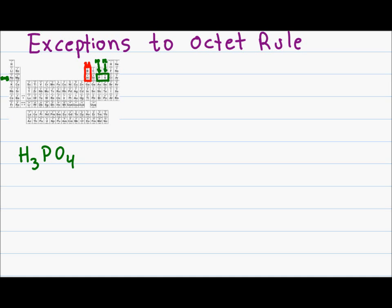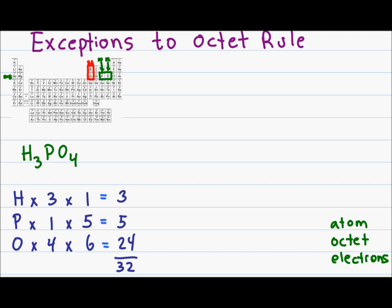Before we start, let's take a quick tally of electrons. We have hydrogen times three and one electron each. We have phosphorus times one and five electrons. Then we have oxygen times four and six electrons. Adding them up, I get a total of 32 electrons. To draw this molecule, we'll refer to our checklist to ensure that we cover all our bases.